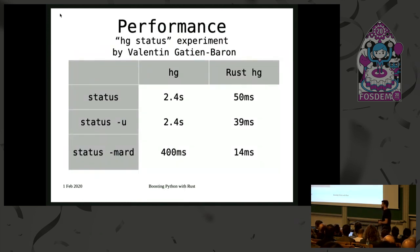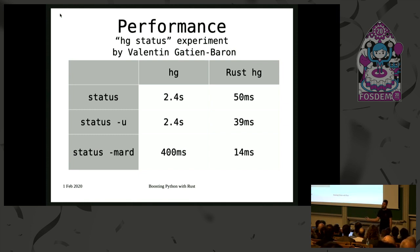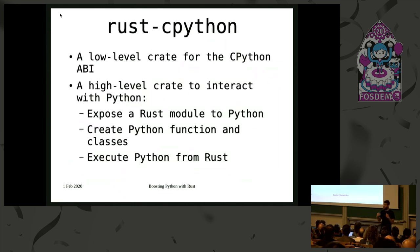There was an experiment made by Valentin, a software developer at Jane Street. He did a very small subset of the hg status command written in pure Rust on a big repository that they have. The performance is quite a lot better than what we have in the Python and C version — it's orders of magnitude better. That sparked a lot of interest in the mailing list and in the community in general, and kickstarted a lot more work that I was a part of.